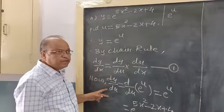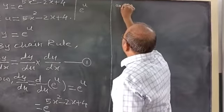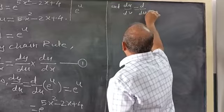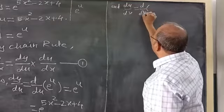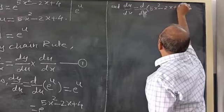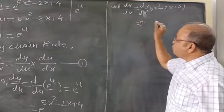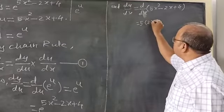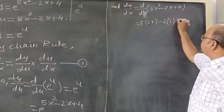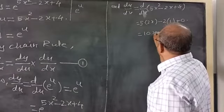dy by du: y in terms of u is e raised to the power u, and the derivative of e raised to the power u is same as e raised to the power u. Substituting u, dy by du = e raised to the power (5x² - 2x + 4). Then du by dx: u is 5x² - 2x + 4. This is 5 into 2x (derivative of x²) minus 2 into 1 (derivative of x) plus 0 (derivative of constant). So du by dx = 10x - 2.